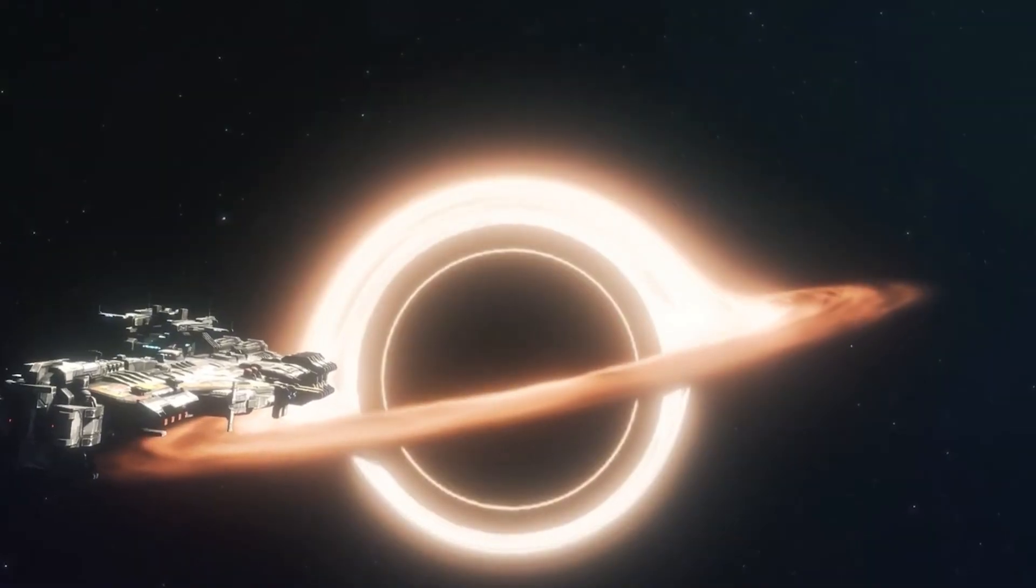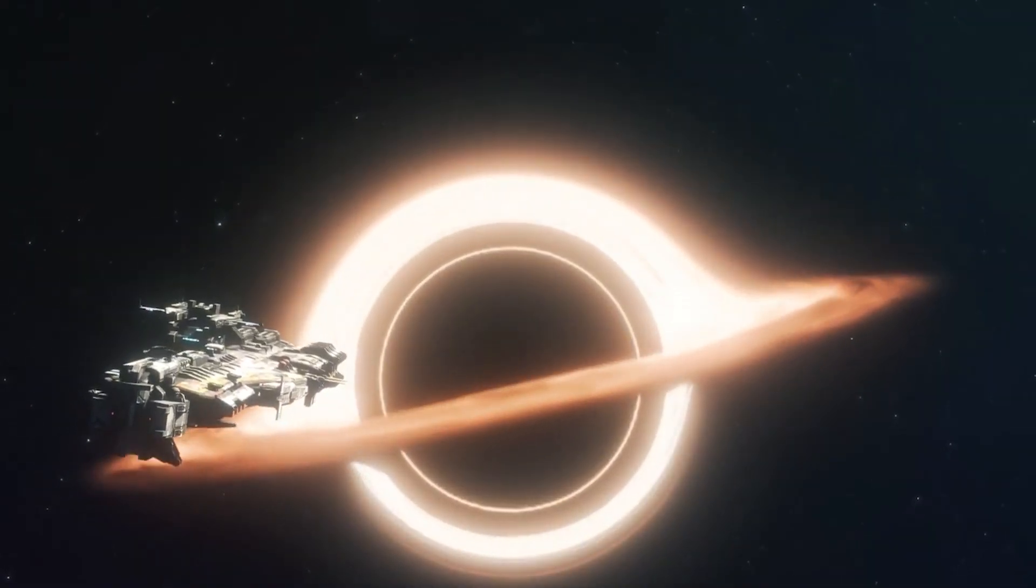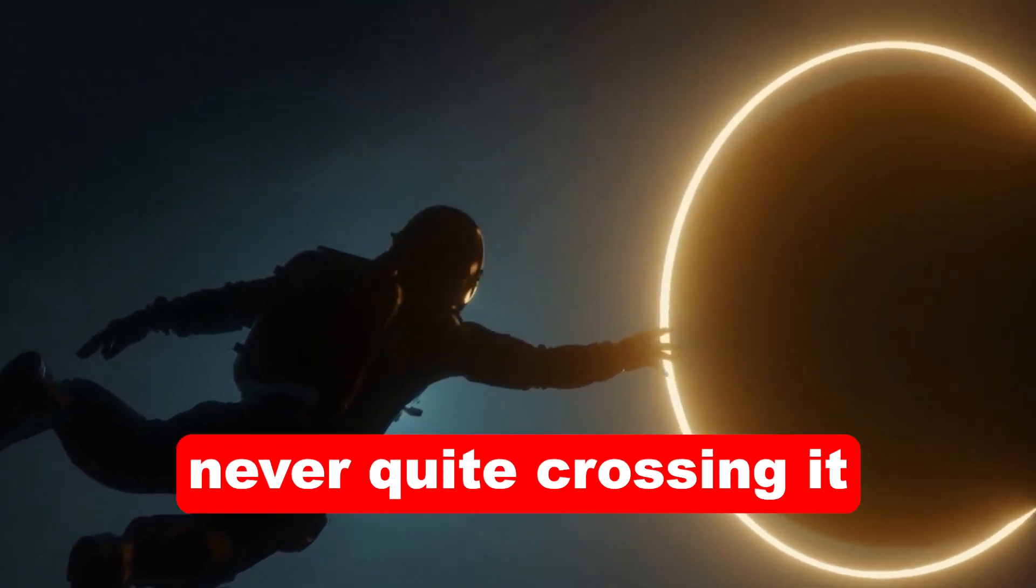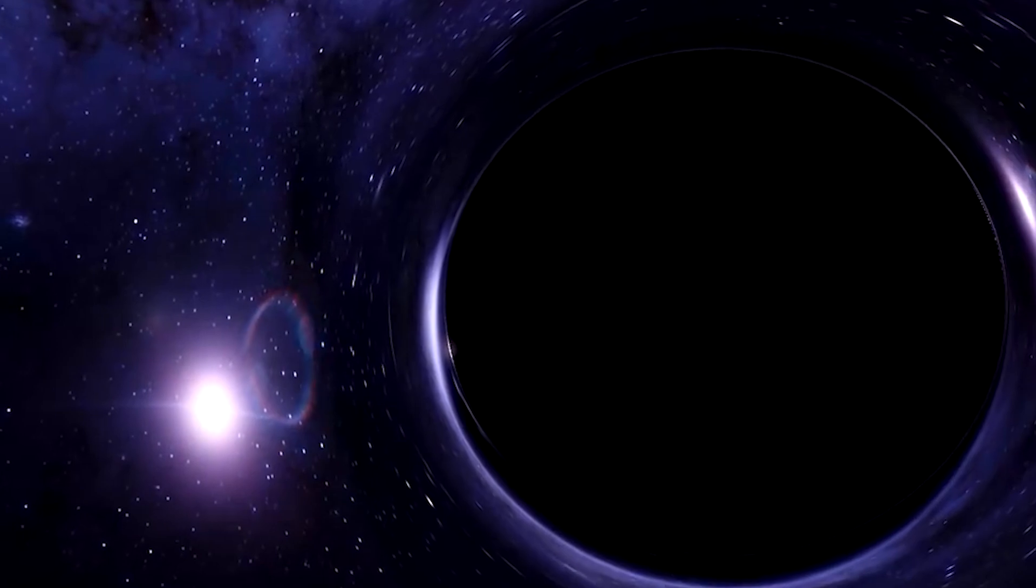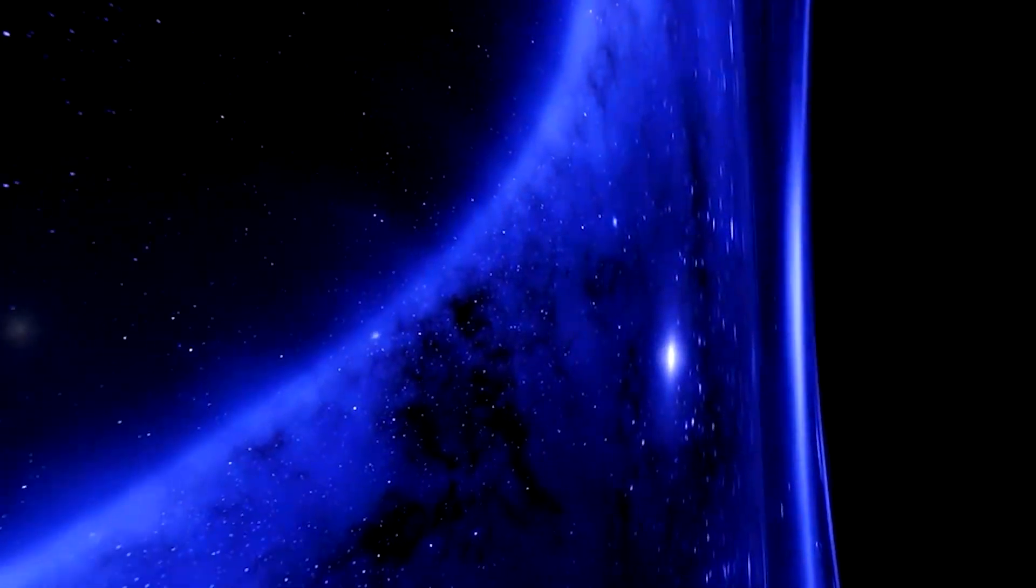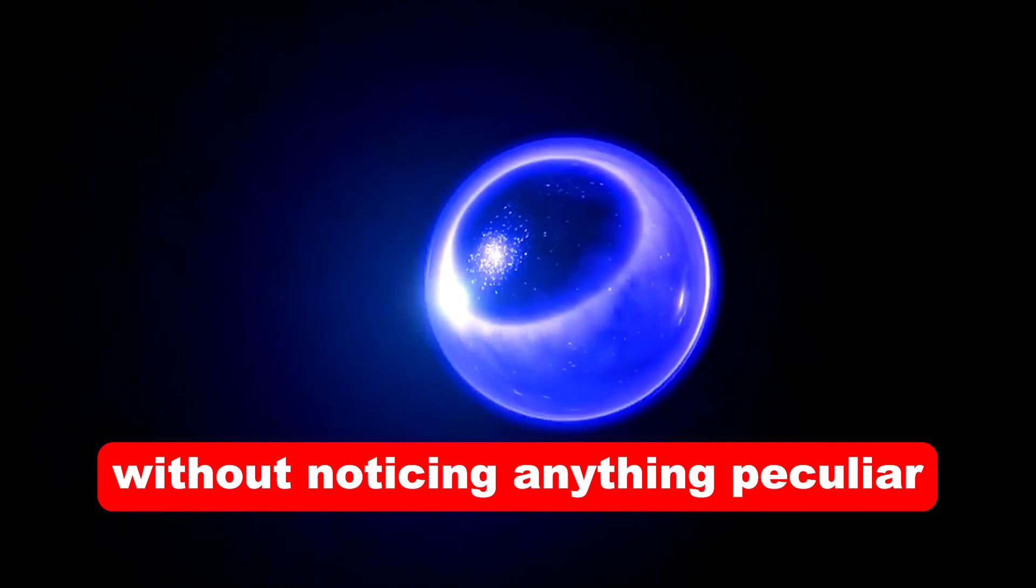To an outside observer, an object falling into a black hole appears to slow down and freeze at the event horizon, never quite crossing it. However, from the perspective of the falling object, time would pass normally, and they would cross the event horizon without noticing anything peculiar.